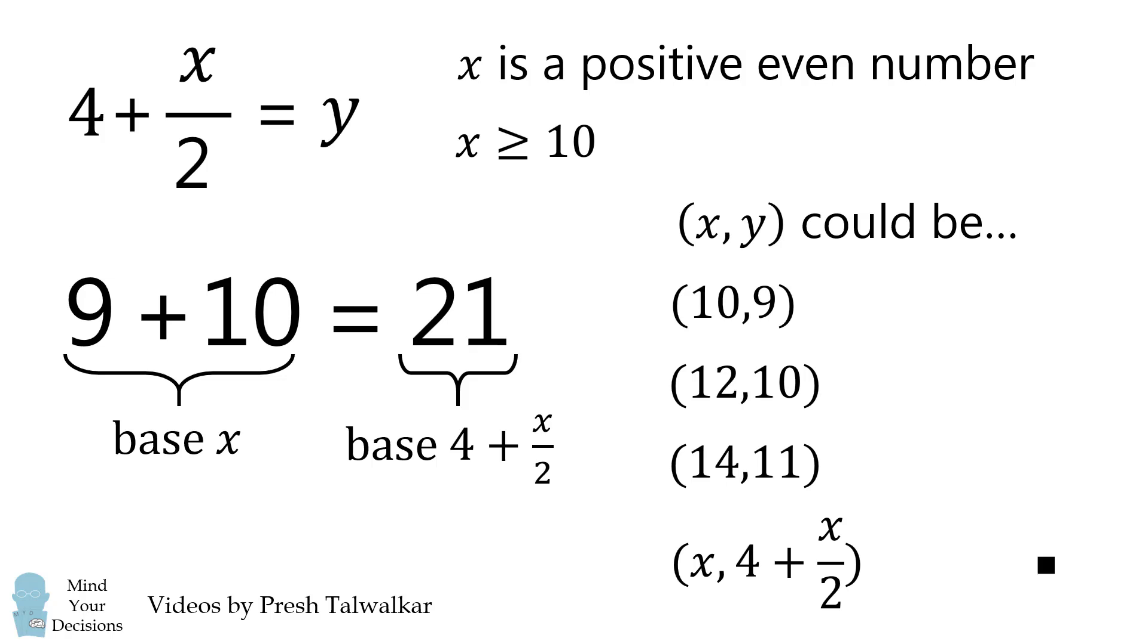So at first glance, 9 plus 10 is equal to 21 is just a false equation, and there's no way that you can correct it. But if we think about number bases, there are actually an infinite number of ways that we can make this equation true. Remarkable!